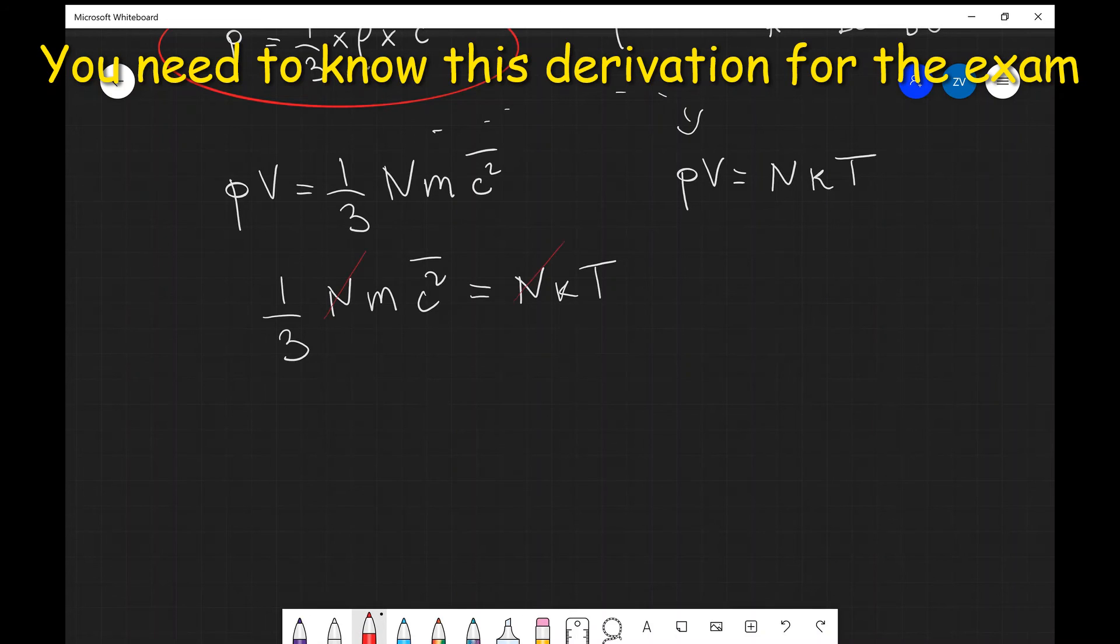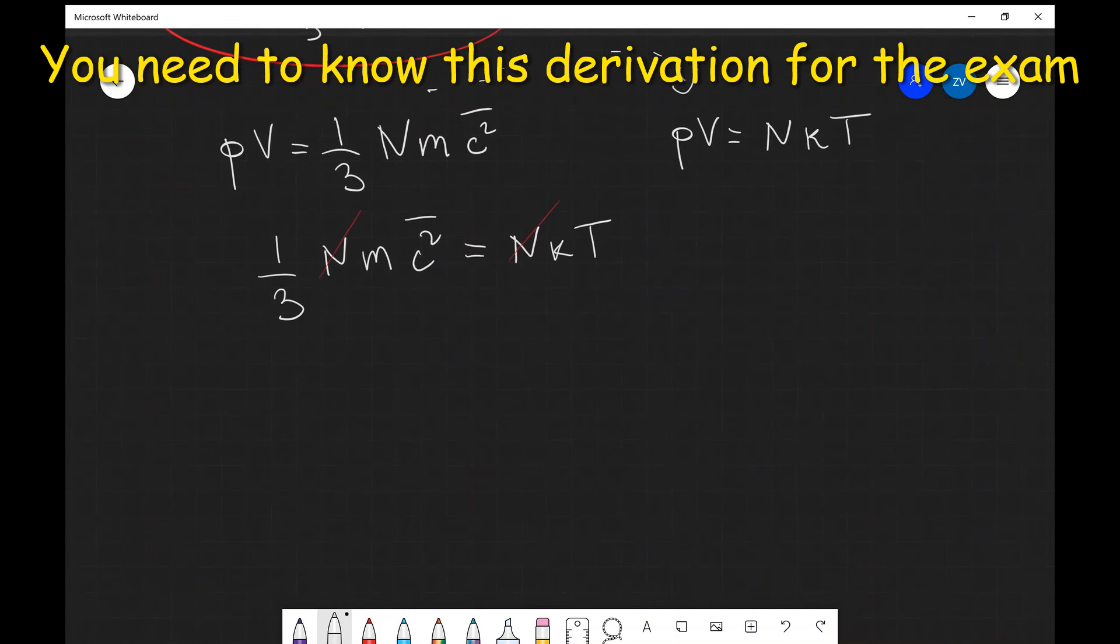We can see that we can do a little bit of cancellation, so N for example can go. What we will be left with over here, let's bring the third onto the other side as well, mc̄² is going to equal 3KT.